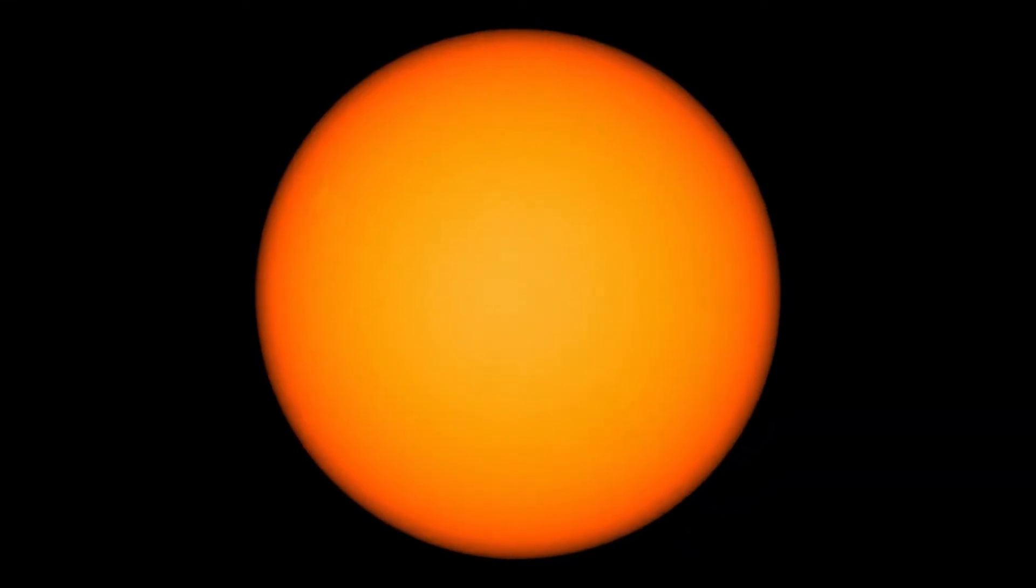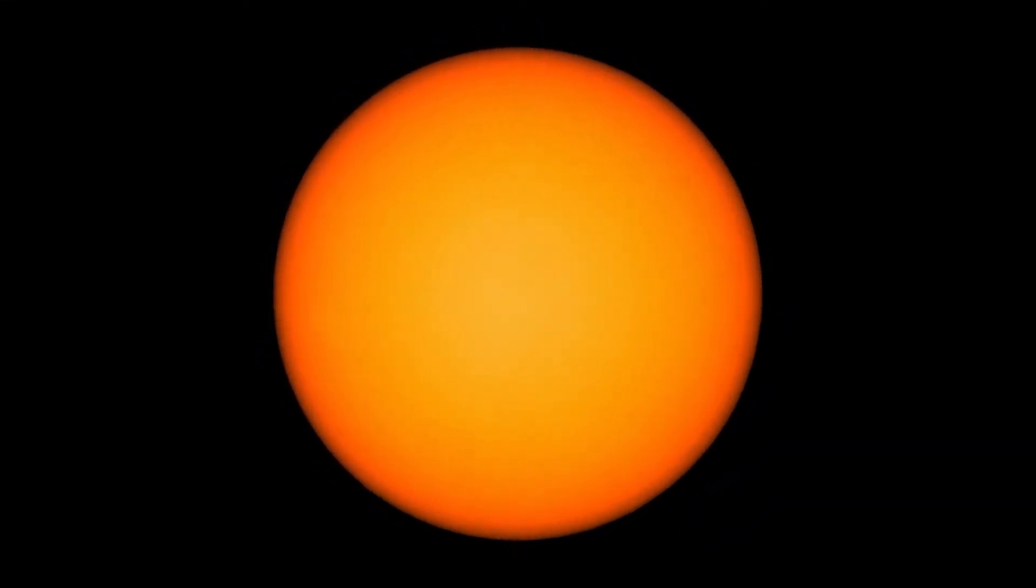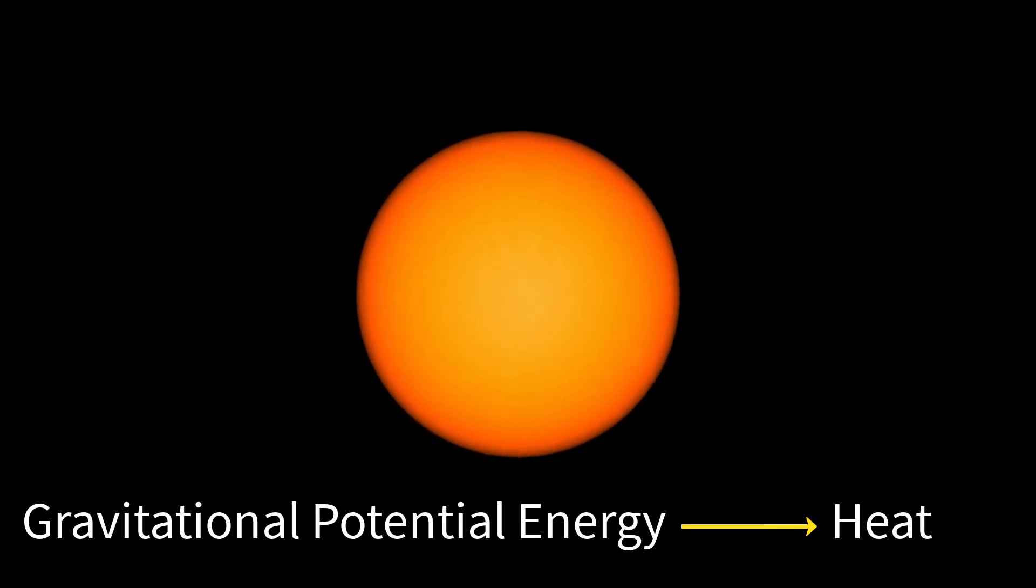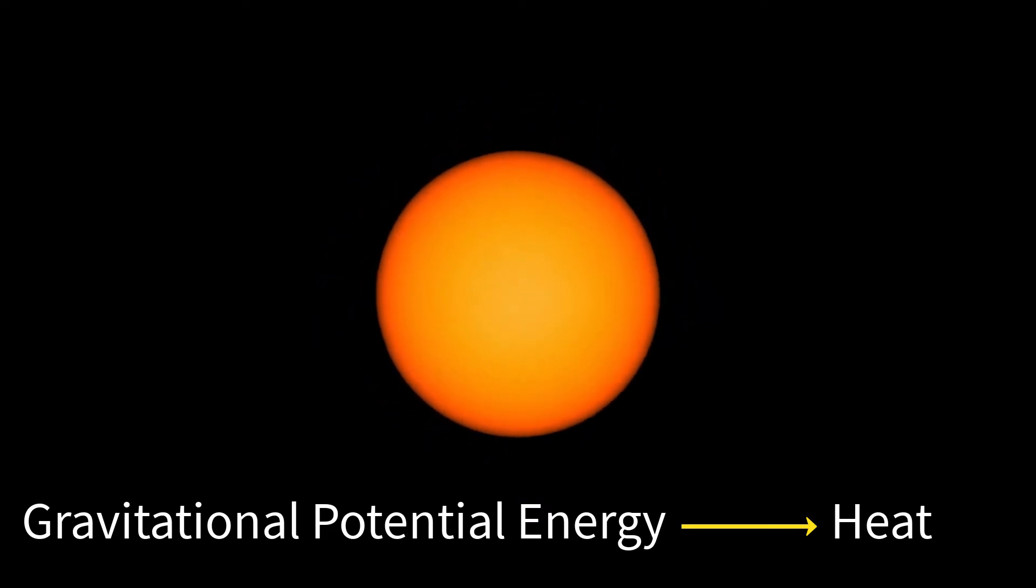In the early part of the 1900s, people thought stars shone by shrinking and converting gravitational potential energy to heat. In fact, this is the way they heat up in the first place, but it's not the main source of their energy.